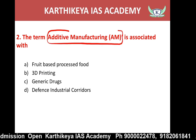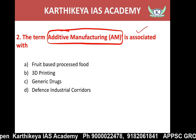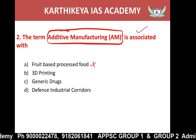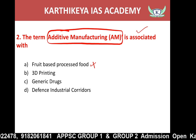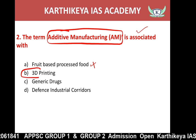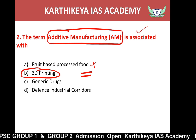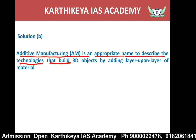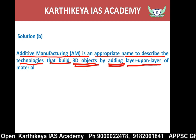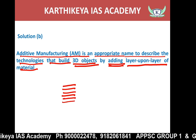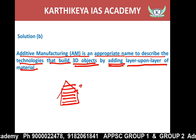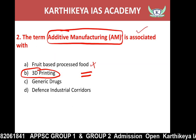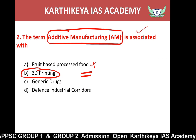The second question asks about additive manufacturing. The answer is 3D printing. Additive manufacturing is an appropriate name for technologies that build 3D objects by adding layer upon layer of material. Adding material layer by layer to form a final object using 3D technology is called additive manufacturing. This is a very important term to remember.